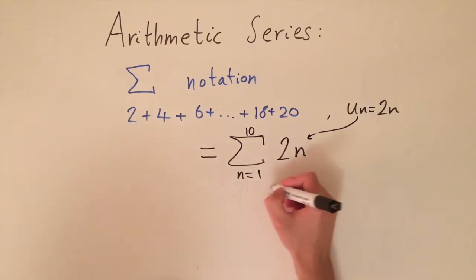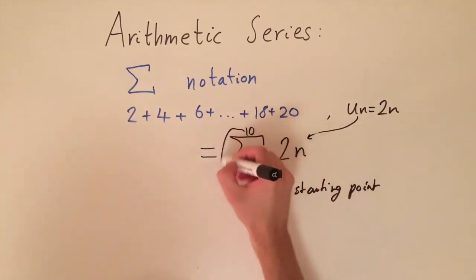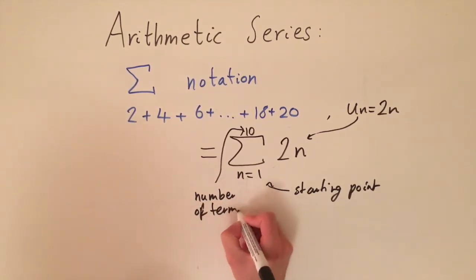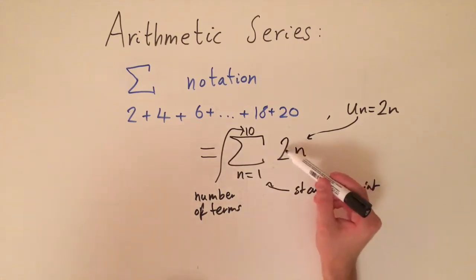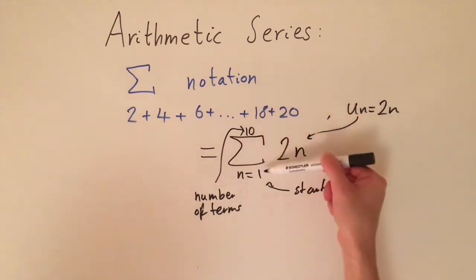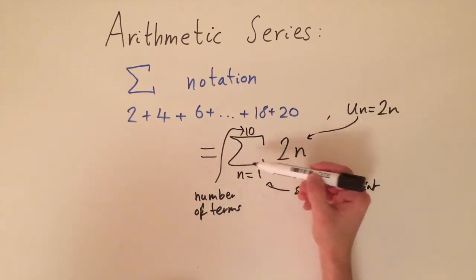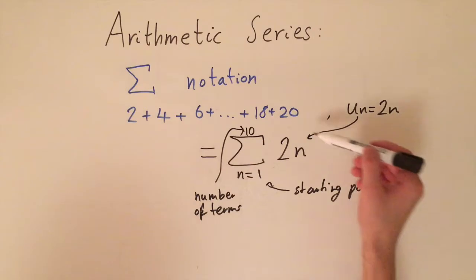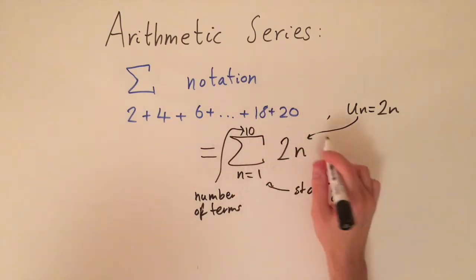Below the sigma is the starting point — the index where we begin. Above it is the finishing point, which is the number of terms. This sigma notation means exactly the same thing as the full series written out. You start at n=1, giving 2 times 1 as the first term, then increase n by 1 each time — n=2 gives 4, n=3 gives 6 — working all the way up to n=10 for the last term. So we've written the whole series in this convenient form.